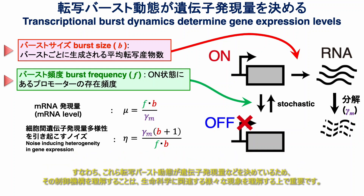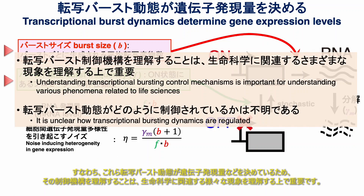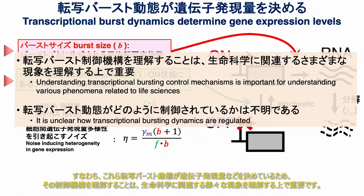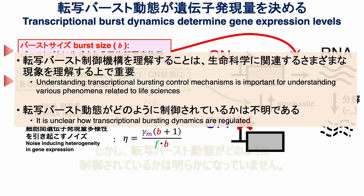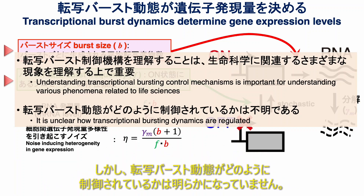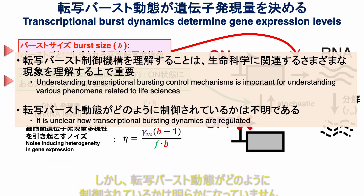In other words, since these transcriptional bursting dynamics determine things such as gene expression levels, understanding their control mechanism is important for comprehending various phenomena related to life science. However, it is not yet clear how these transcriptional burst dynamics are regulated.